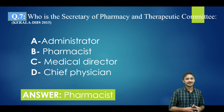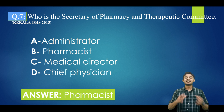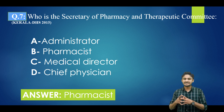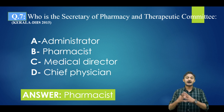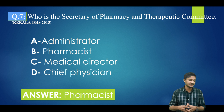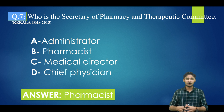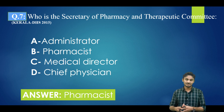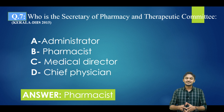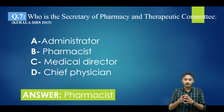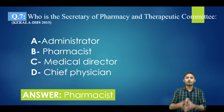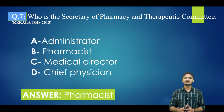Some important points regarding PTC: the PTC should have at least three physicians, one pharmacist, one nurse, and one hospital administrator. The administrator serves as director, the chief physician is chairman, and the pharmacist is secretary. The secretary — that is, the pharmacist — is responsible for preparing the agenda for PTC meetings. There should be a minimum of six meetings per year.